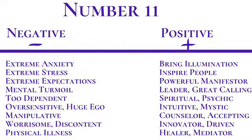The last negative qualities sometimes seen in the 11 are that they tend to be oversensitive — because of the two energy their feelings can get hurt very easily. Also, sometimes they can be manipulative; instead of directly telling a person what they want, they will try to go around the situation and manipulate that person into doing what they want. These reflect the negative qualities of both the one and the two found within the 11.